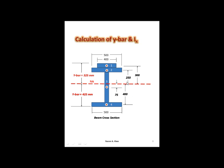Likewise with the upper half: for shape 1, we have 325 to the top end minus 25 — half the height — giving 300. And 325 minus 50 minus 25 gives 250. So we have all the y-bars needed to calculate our inertia value.